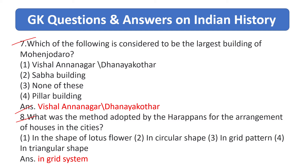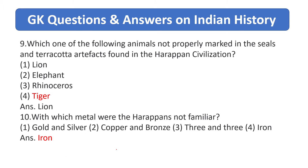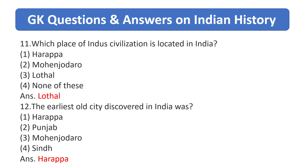What was the method adopted by the Harappans for the arrangement of houses in the cities? Answer is the grid system. Which animal is not properly marked in the seals and terracotta artifacts found in Harappan civilization? Answer is lion. With which metal were the Harappans not familiar? Answer is iron.